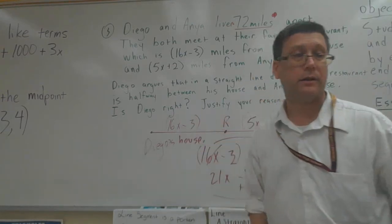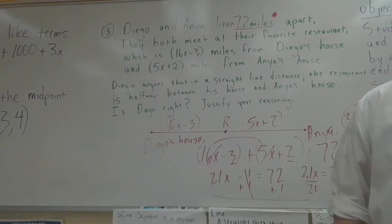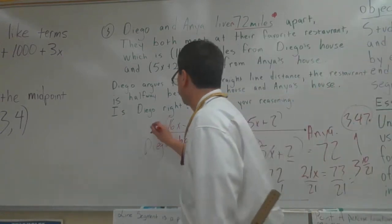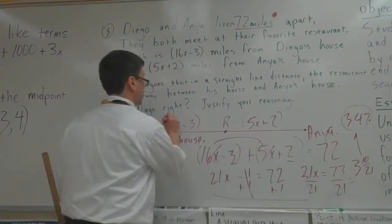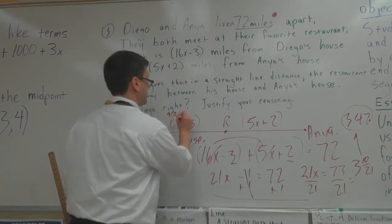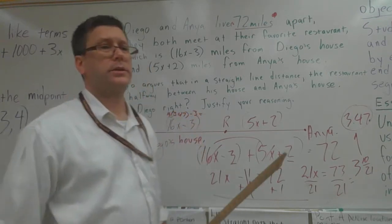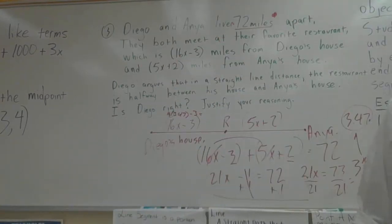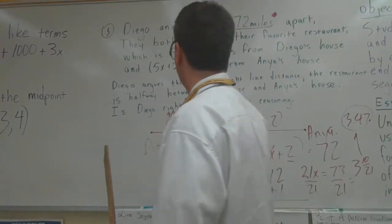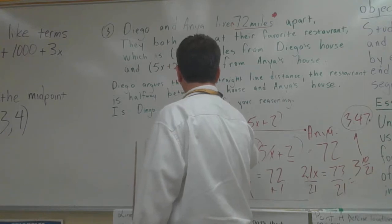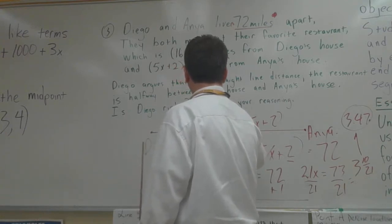So that's 16 times 3.47 minus 3. What does that equal? It's going to come out to equal 52.52.